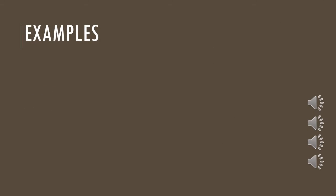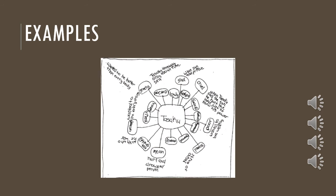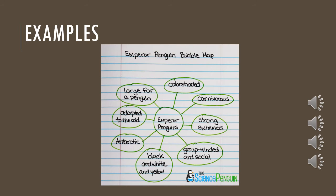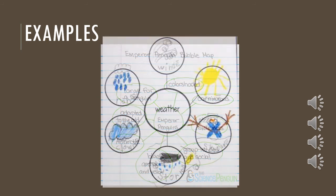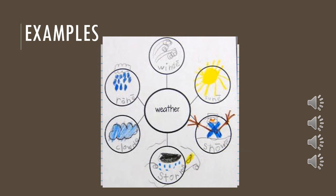Let me show you some examples other people made. Here a bubble map was used to describe a character in a story. This is a bubble map used in science to describe penguins. And remember, you don't have to be able to write to create thinking maps — you can use pictures as well.